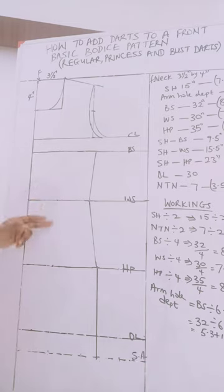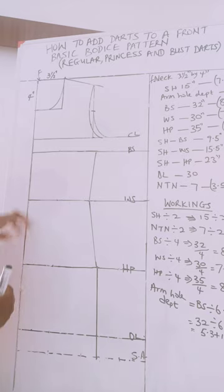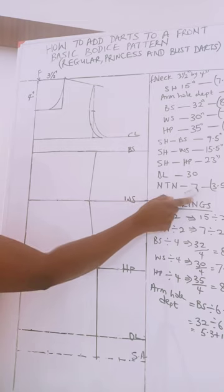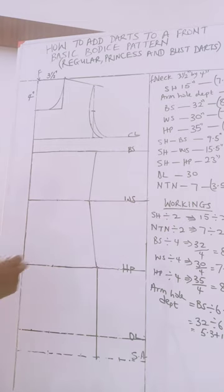I'm going to be showing you how to add the regular dart, the princess dart, and then the bust dart. So start with the regular dart. For the regular dart, first of all mark out the navel to navel points, which for this customer is seven inches. Seven inches divided by two because our fabric is unfolded, we have 3.5.